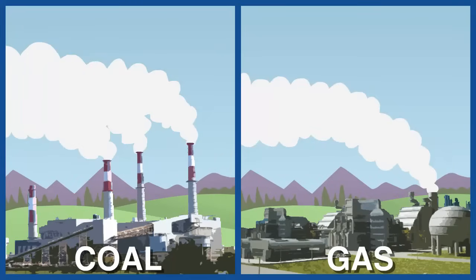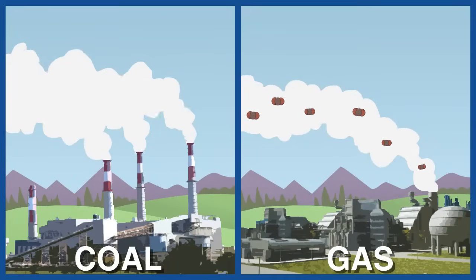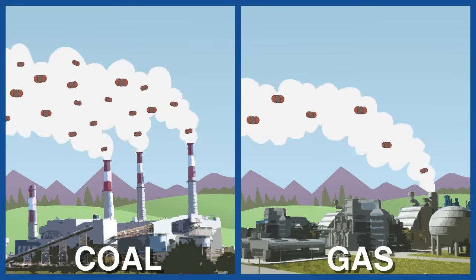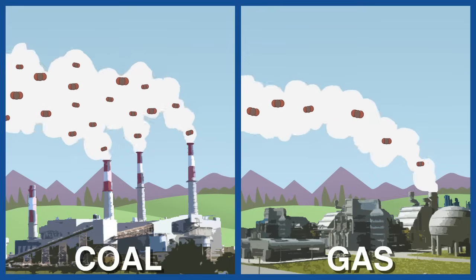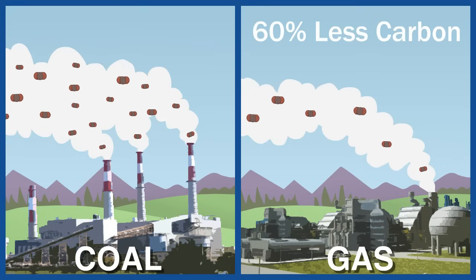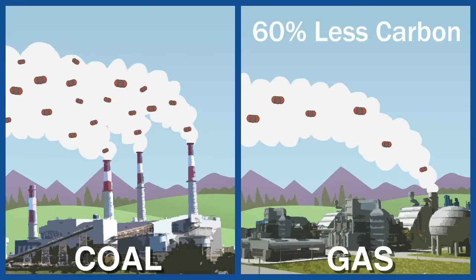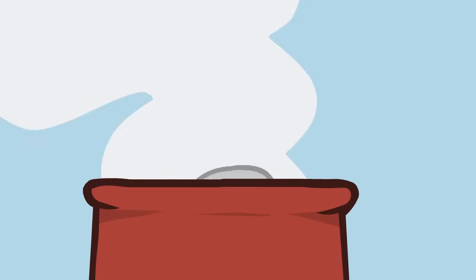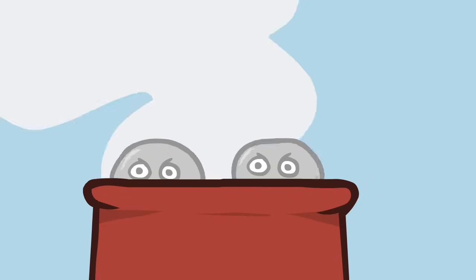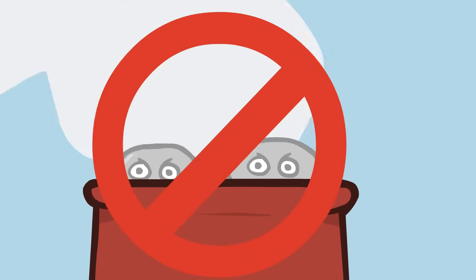Natural gas starts out with a lower carbon content than coal. And with more efficient power plants, it can produce electricity with about 60% less carbon dioxide than coal-fired power plants. Also, natural gas plants do not release many of the toxic substances like mercury that comes from burning coal.